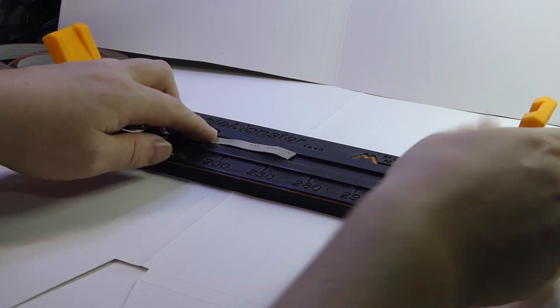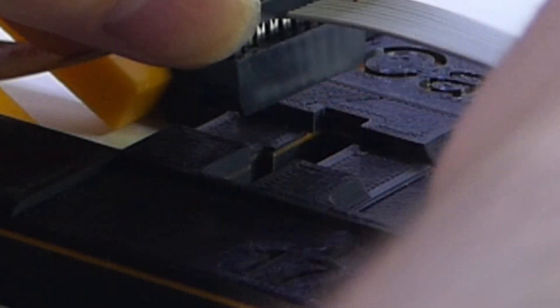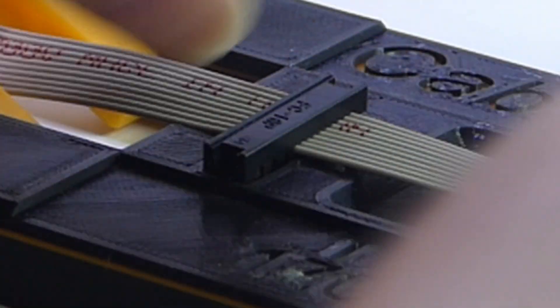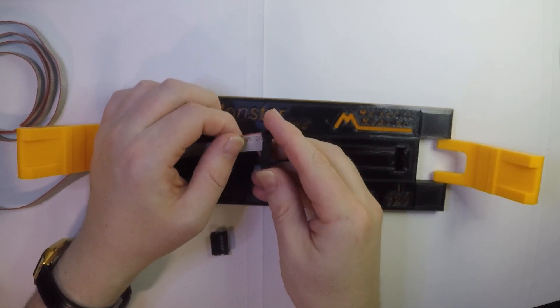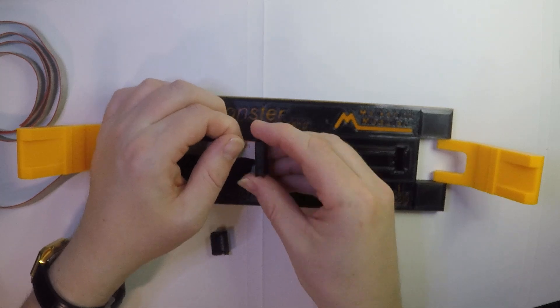Now grab a 16-way connector and thread it onto the ribbon cable. The hole for the connector is keyed so it can only go in one way. Use this as a guide for the correct orientation.